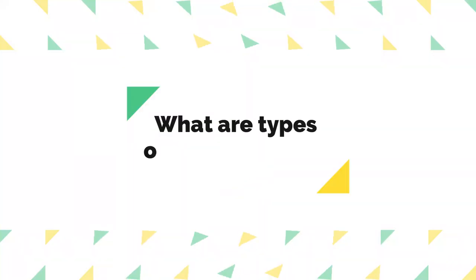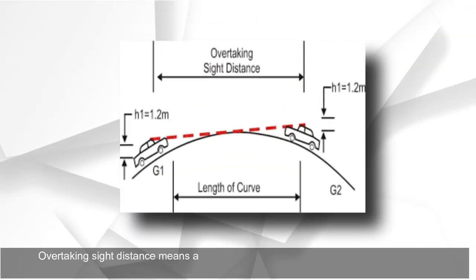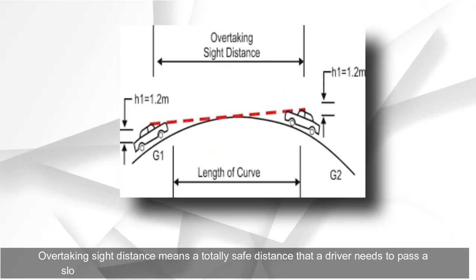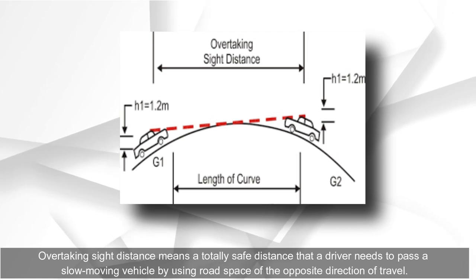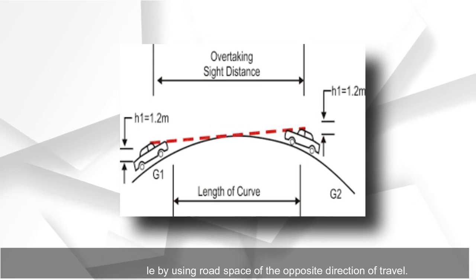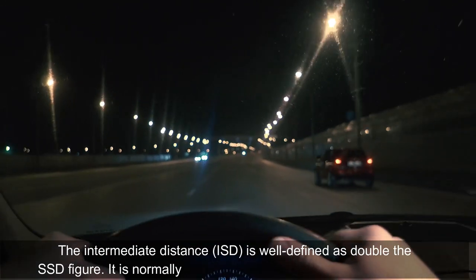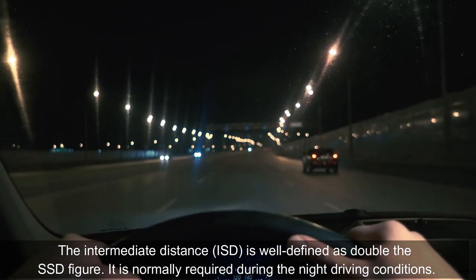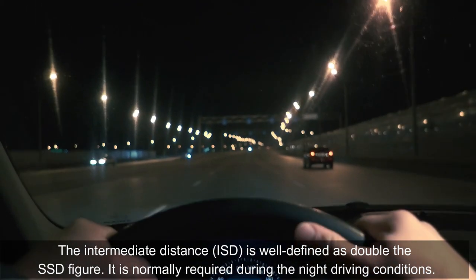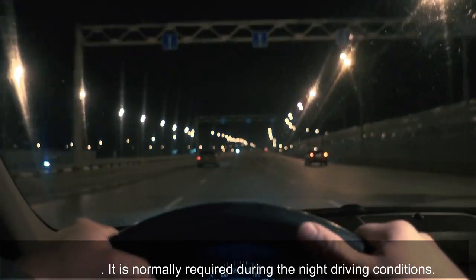There are several types of sight distance. Overtaking sight distance means the totally safe distance that a driver needs to pass a slow-moving vehicle by using the road space in the opposite direction of travel. Intermediate sight distance (ISD) is defined as double the SSD figure, and is normally required during night driving conditions.